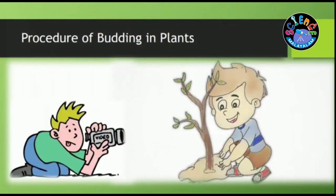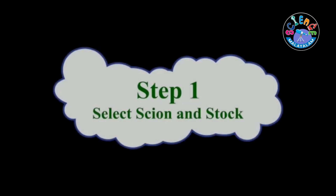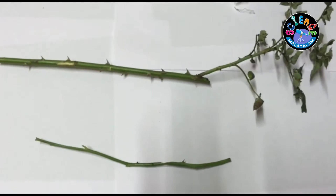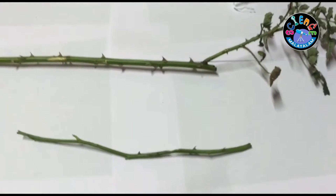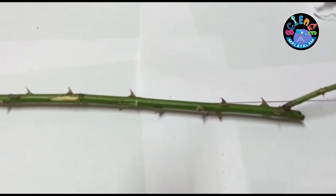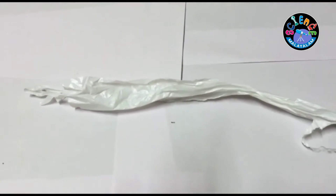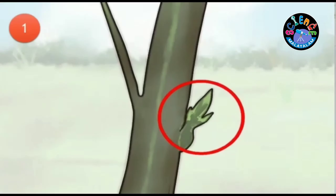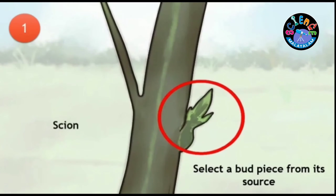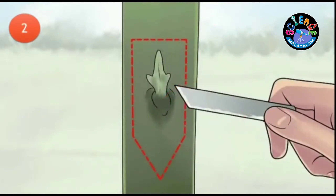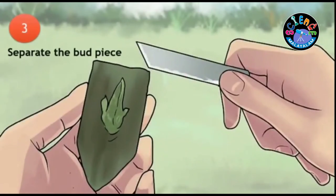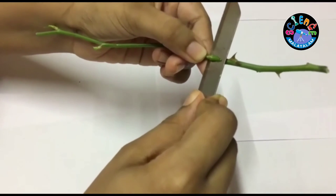Now let's see a video of budding. The branch selected for budding is called the scion. Cut off the bud from a quality plant.